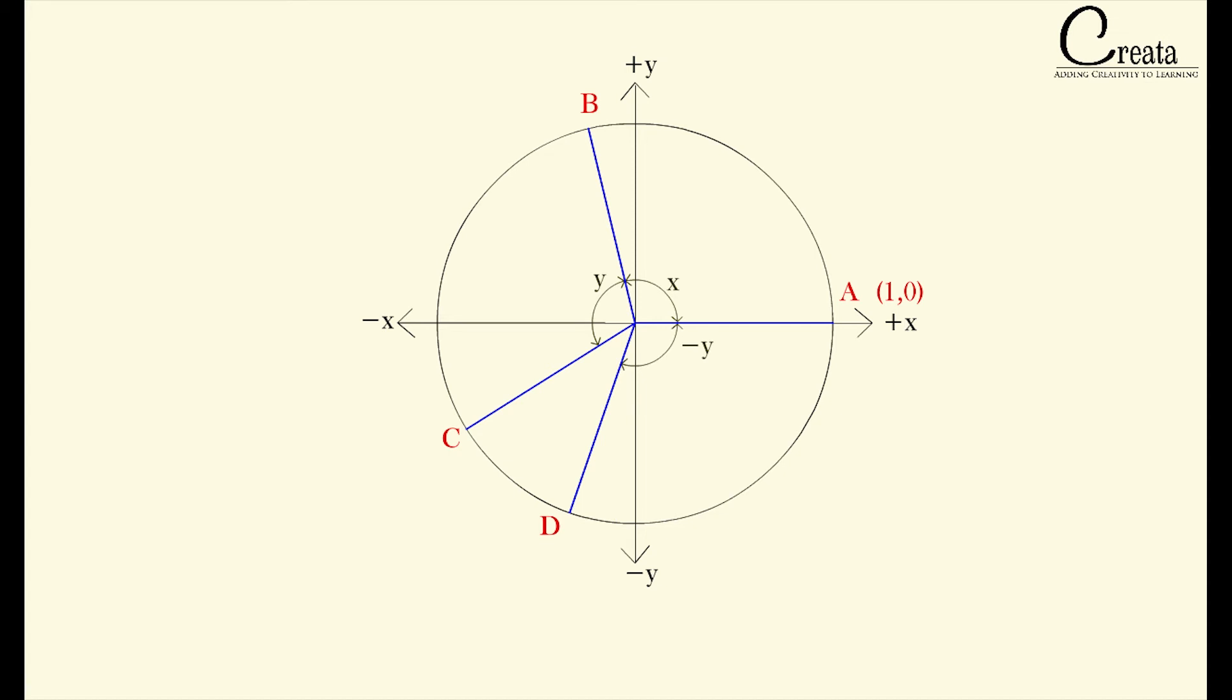So we have given 4 points A, B, C and D. Next step is to give coordinate to all these points. A point we have already given the coordinate. Now we have to give coordinates to point B, C and D.